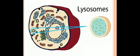Here you can see the picture. The small round-like structure is called the lysosome. Inside the lysosome, you can see the green colored dotted structure, which is called the digestive enzyme, which is helpful to digest the waste material from the cell.